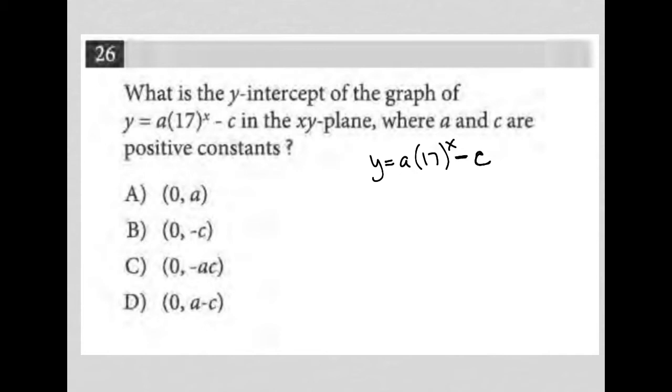Okay, so first of all, this is just the generic equation y equals a, b to the x, which is going to be an exponential equation because it's b to the x term here. Because as x gets larger, b gets much larger, and you'll have a curve that goes up like this. And the usual situation here is that your y-intercept is typically at 0, 1.